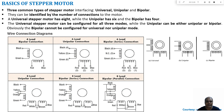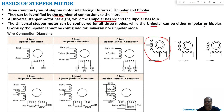There are three common types of stepper motor: universal, unipolar, and bipolar. They can be identified by the number of connections coming out of the motor. A universal stepper motor has eight leads, a unipolar has six connections, and a bipolar has four connections. A universal stepper motor can be converted to either unipolar or bipolar. An unipolar stepper motor can be converted only to bipolar. From bipolar, we cannot convert to universal or unipolar.